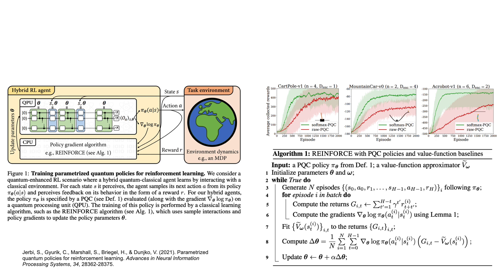One group developed parameterized quantum policies for reinforcement learning, replacing the policy function Pi with a quantum neural network. They use a data re-uploading encoding method, which uploads or encodes data into the quantum circuit multiple times — allowing a circuit with fewer qubits but greater depth. They numerically show that REINFORCE can train this quantum neural network to solve control problems such as CartPole, MountainCar, and Acrobot.